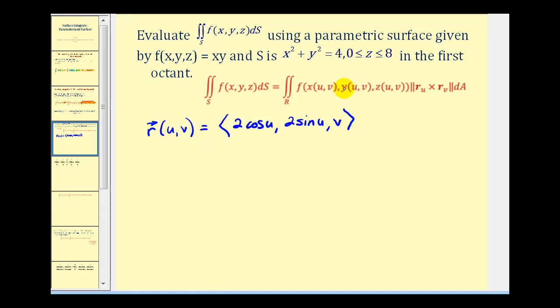And because we're in the first octant, u is going to be on the closed interval from zero to pi over two. And v will be on the closed interval from zero to eight. So let's work on determining the magnitude of this cross product.